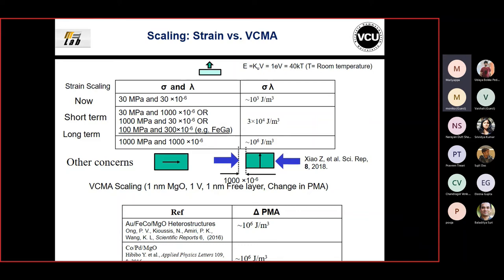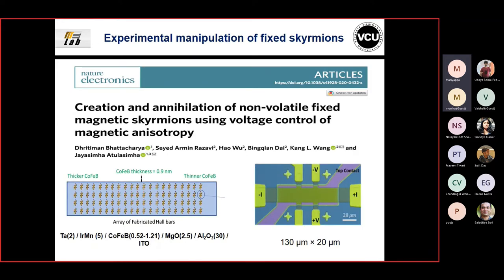Now we shift gears from strain to voltage control of anisotropy. Here I calculate energy densities. Stress and strain can give you roughly 10^4 J/m³. Whereas when you use direct voltage control of anisotropy, assuming a one nanometer oxide layer and a one nanometer magnetic layer, the change in perpendicular anisotropy energy density can be 10^6 J/m³. This is important because as your memory device shrinks, its volume becomes small. With a very small volume, you need a very high anisotropy to keep your energy barrier - anisotropy times volume - constant at one electron volt (40 kT at room temperature) so the device doesn't thermally switch.